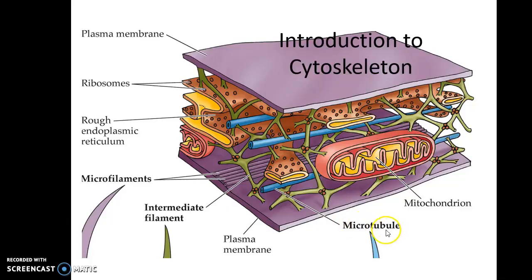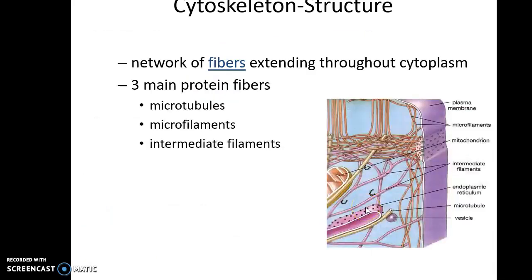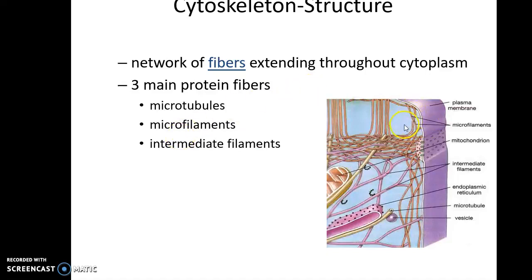Let's see what is the cytoskeleton. The cytoskeleton, as the name suggests, is the skeletal network of a cell — a network of fibers extending throughout the cytoplasm. There are three main protein fibers: microtubules, microfilaments, and intermediate filaments. These thin thread-like structures are the microfilaments, these are the intermediate filaments, and these are the microtubules.